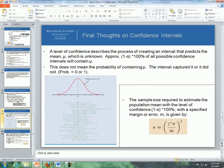The next slide is final thoughts about confidence intervals. A confidence interval describes a process of creating an interval that predicts the mean mu, which is unknown. Approximately 1 minus alpha times 100% of all possible confidence intervals will contain mu. So, for instance, if alpha equals 0.05, approximately 95% of all possible confidence intervals will contain mu.